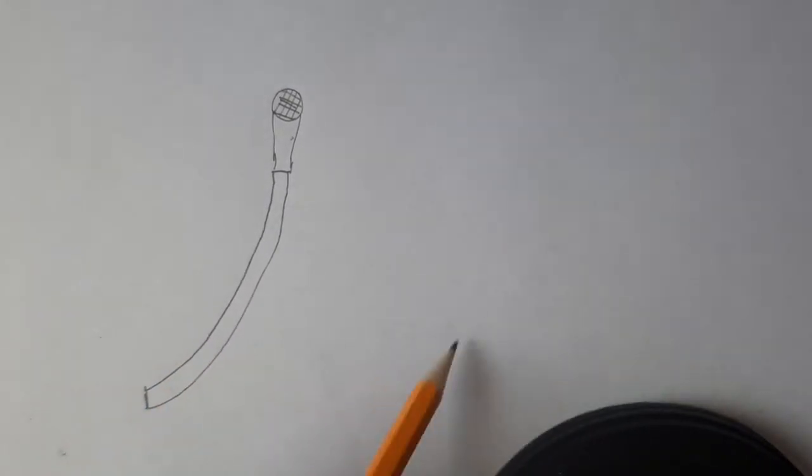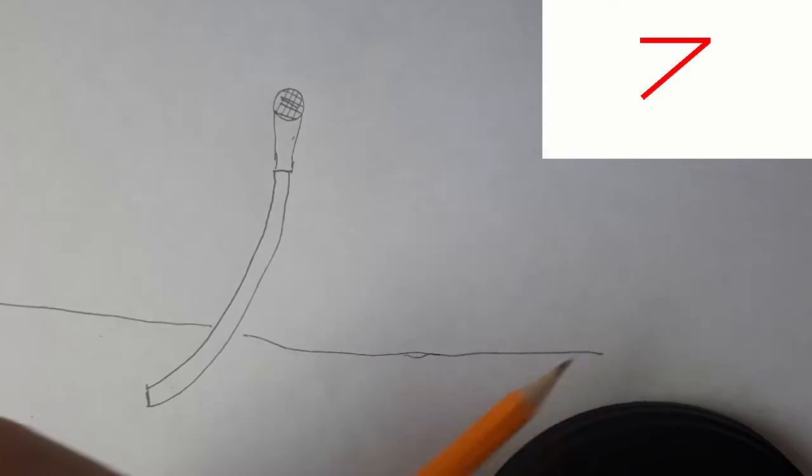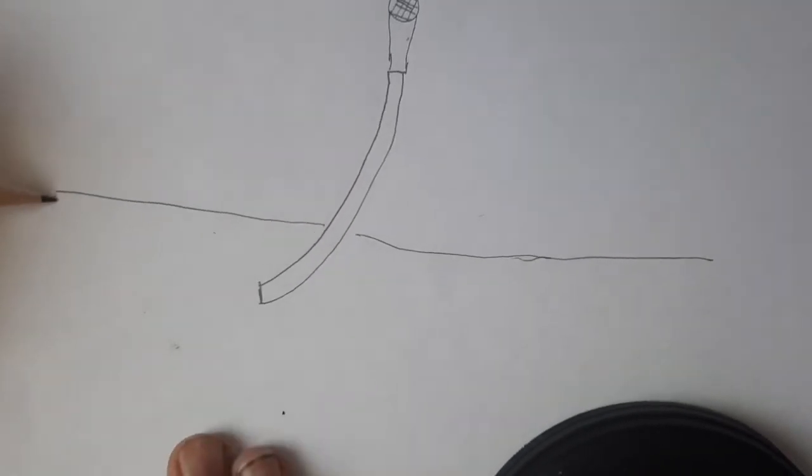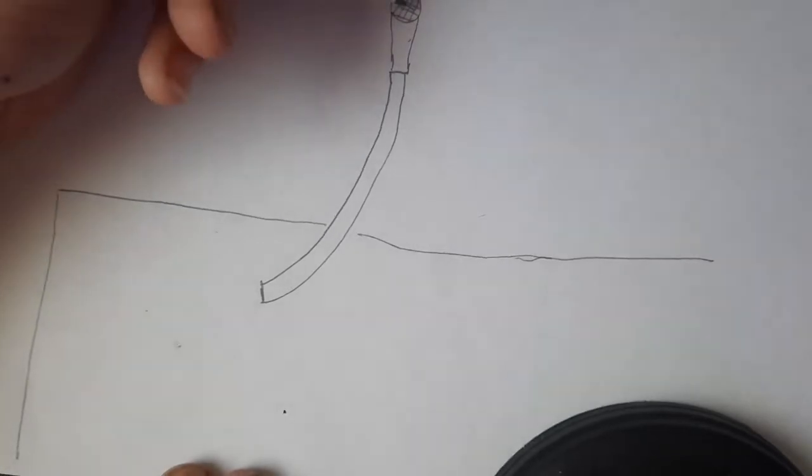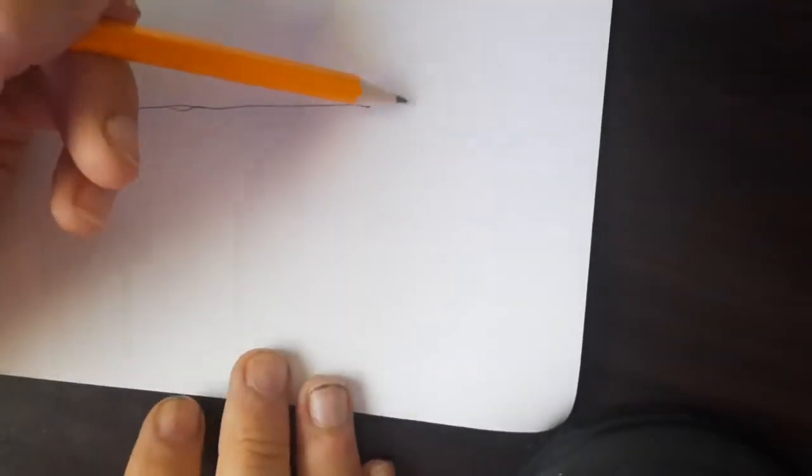And then we need to draw a stage. For a stage, we're going to do the letter Z, but just the top part of the letter Z. We're not going to do the middle diagonal part or the bottom part. Then we're going to do a letter I lowercase. We can hide that dot so we don't waste it up here in the microphone. And then another letter I on this side.